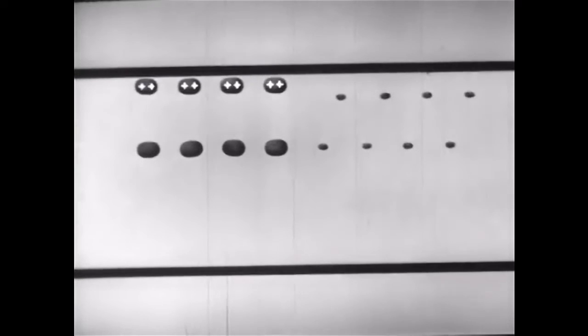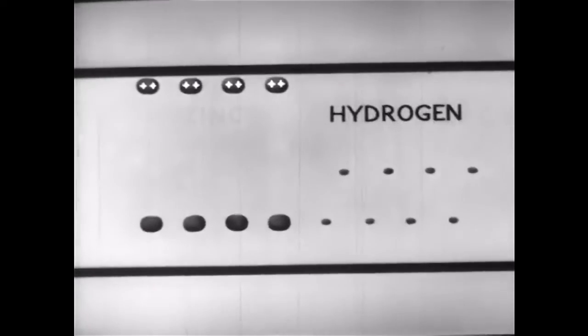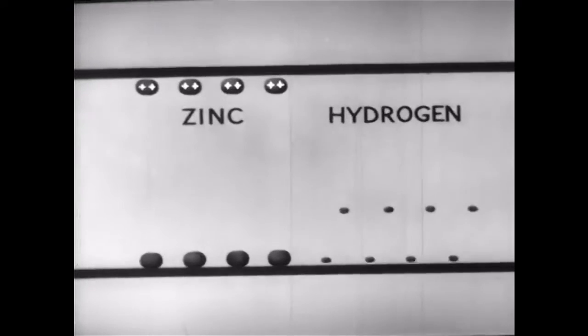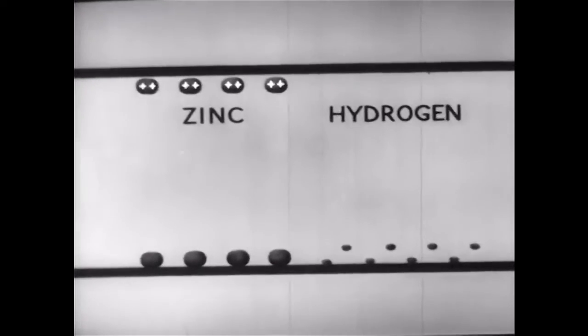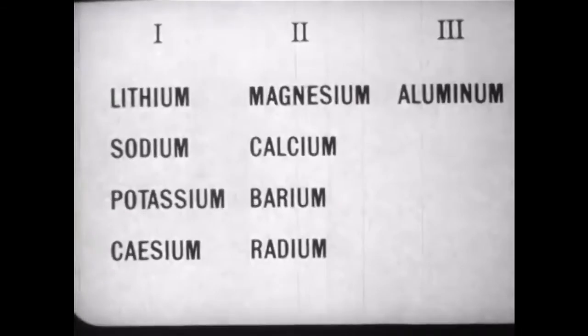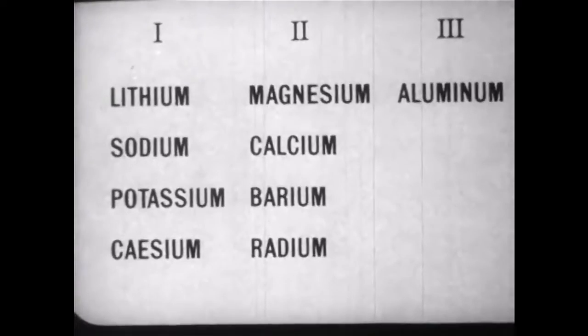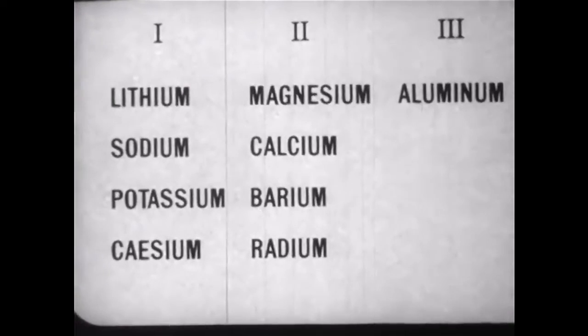If we use molten zinc chloride however, we find that only half as many atoms are removed from the solution by the same quantity of electricity. An atom of zinc must therefore carry twice the charge of a hydrogen atom. Similarly, it has been found that atoms of all elements carry simple whole number multiples of the charge carried by hydrogen.